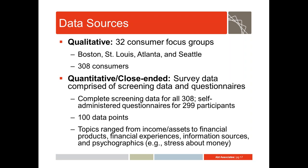The initial bulk of data came from 32 focus groups with consumers in four different cities, comprising 308 participants. There was complementary quantitative data collected on every participant. Initially, in order to assign people into the focus groups, we asked them a long series of screening questions to determine whether they had particular kinds of experiences with financial products, or in the case of auto financing, if they had purchased a car recently. We also segmented them by their levels of experience in the financial marketplace.